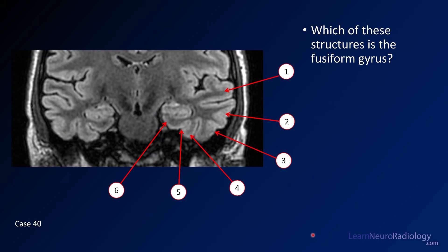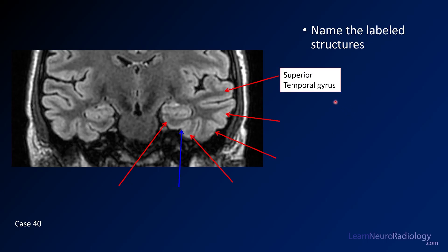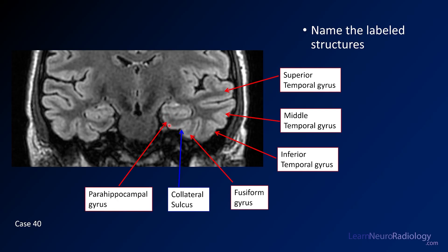Case 40 is an anatomy question. There are six structures labeled on a coronal FLAIR image through the brain — identify the fusiform gyrus. Low-hanging fruit anatomy questions like this are common on the ABR exam and board exams. The structures from superior to inferior are: superior temporal gyrus, middle temporal gyrus, inferior temporal gyrus — named the same way as the frontal gyri. The answer is number four, the fusiform gyrus. Number five is the collateral sulcus, and number six — the gyrus closest to the hippocampus — is the parahippocampal gyrus.